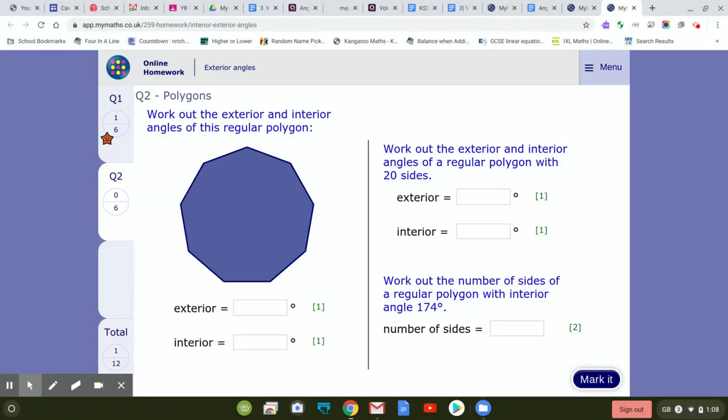To find the exterior angle, it's 360 divided by 9, which works out evenly enough to be 40. To find the interior angles, the number of sides—so n is 9—9 minus 2 is 7 times 180.